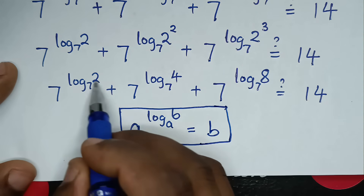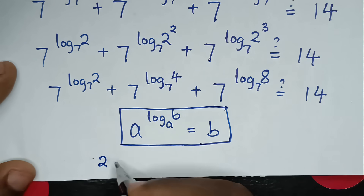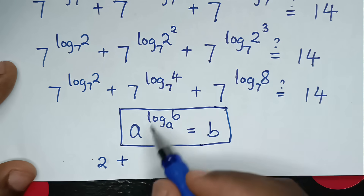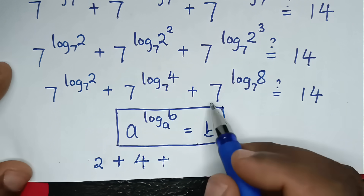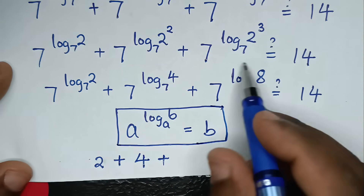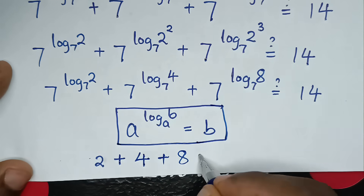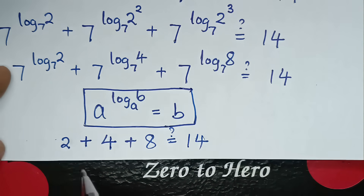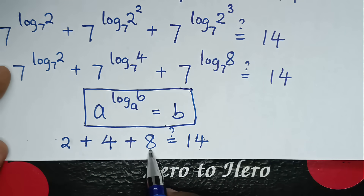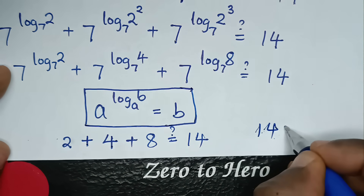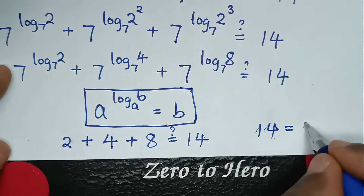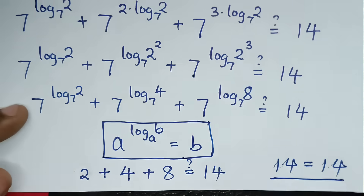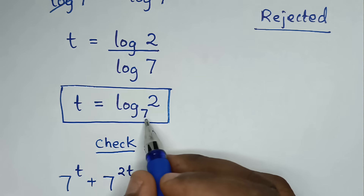Now, 7 power of log base 7 of 2 is the same as 2, plus 7 power of log base 7 of 4 is the same as 4, plus 7 power of log base 7 of 8 is the same as 8, is equal to 14. So 2 plus 4 plus 8 is 14, giving 14 equals 14. The left side and right side are equal, so it is confirmed true. The value of t is log base 7 of 2.